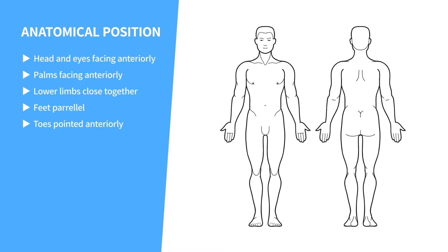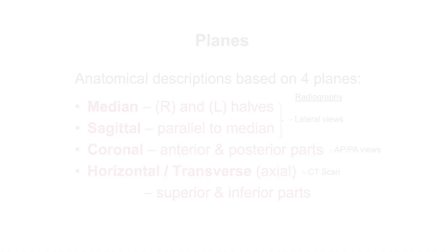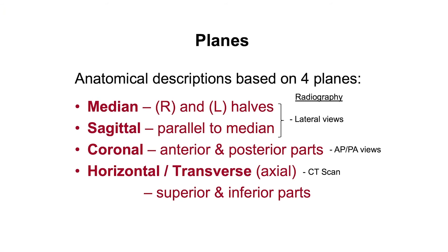Anatomical descriptions are based on four imaginary planes called the median, sagittal, frontal, and transverse planes, which intersect the body in the anatomical position. Knowing these body planes is necessary to understand the upcoming anatomy content, and also when you're looking at MRI or CT scans, as you're able to view the body in all of these planes.